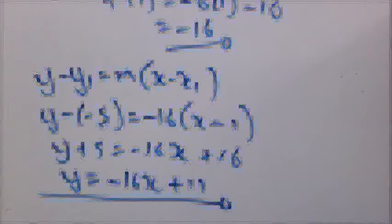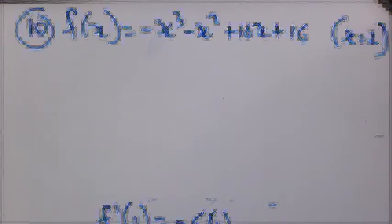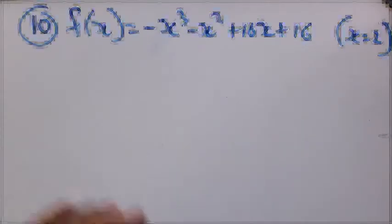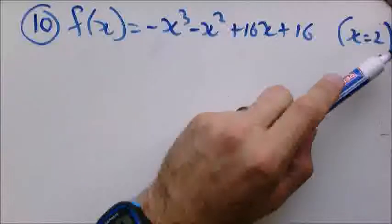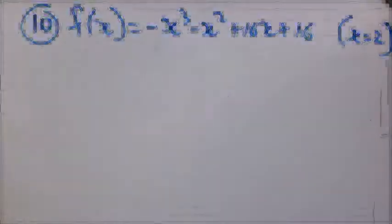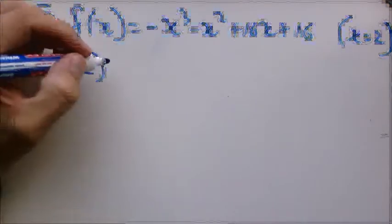So the next one is question number 10. And it's a cubic function. Now you will see it's a longer equation. But in principle the calculations will remain the exact same. We still need the coordinate and the gradient at that point. So we have X equals 2. We have our expression. So first things first. Let's get the rest of that coordinate.